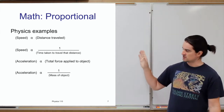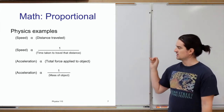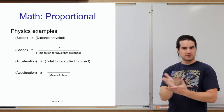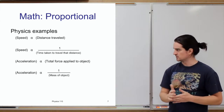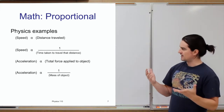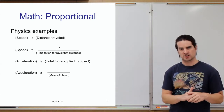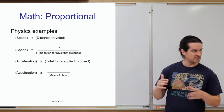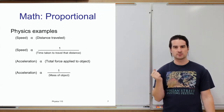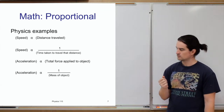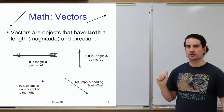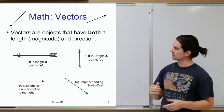Another example we'll come back to later: the acceleration of an object — how its speed and direction change over time — depends on the total force applied to that object. It's also true that the acceleration of an object is inversely proportional to the mass of that object. We'll talk more about what that means later on.